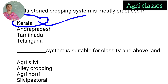The silvi-pastoral system is suitable for class 4 and above land in the land capability classification. Classes 1 to 3 are arable lands for crop cultivation. Beyond class 4, management practices are used. The options are agri-silvi, alley cropping, agri-horti, and silvi-pastoral. The correct answer is silvi-pastoral system.